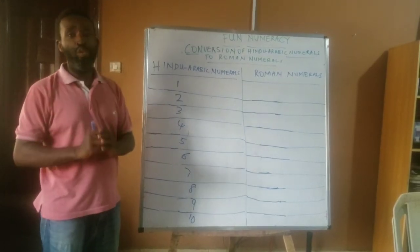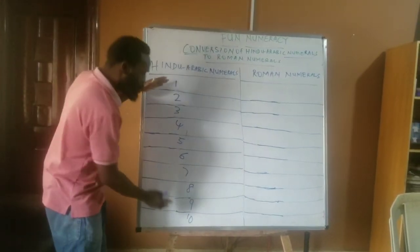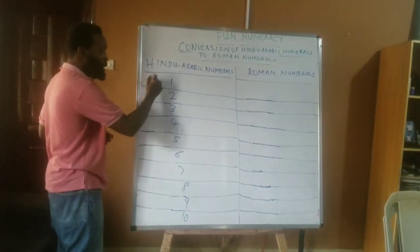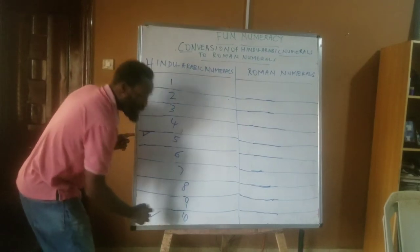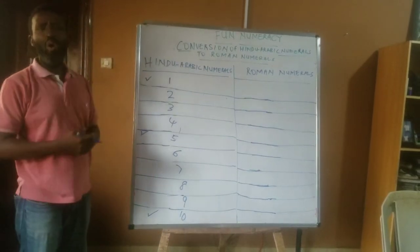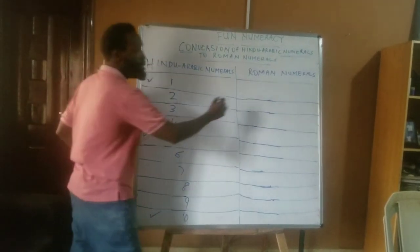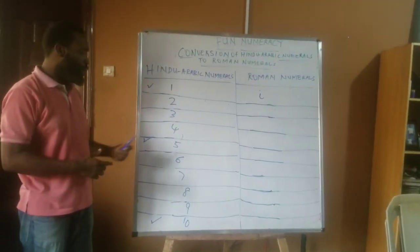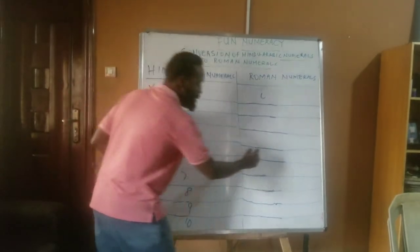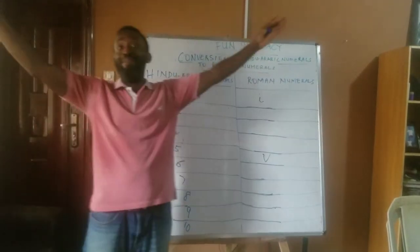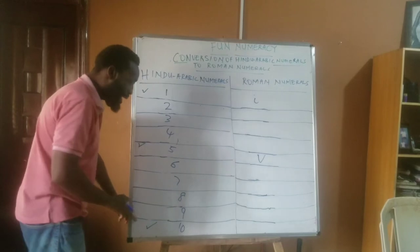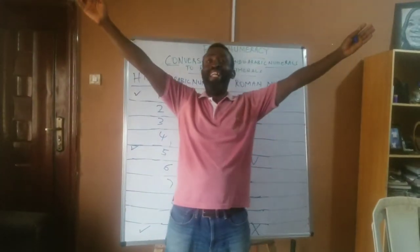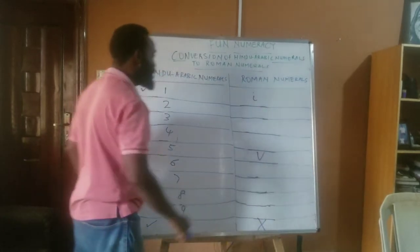Now, there are 3 special numbers when we are changing from 1 to 10 to Roman numerals. The numbers are 1, 5, and 10. What do we call 1 in Roman numerals? We call it I. And then what do we call 5? We call it V — a big capital letter V. And 10 is X — the capital letter X.